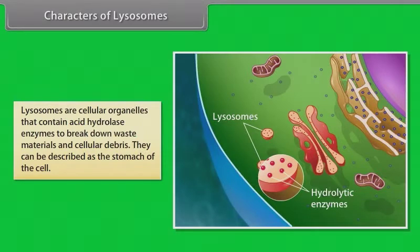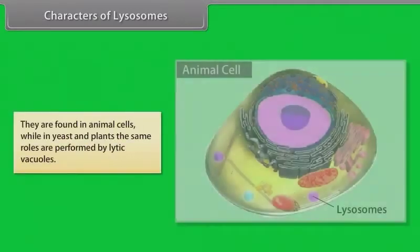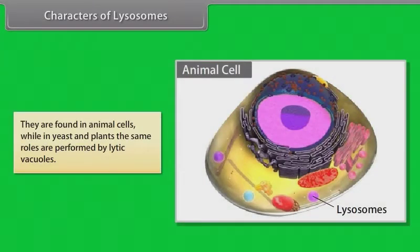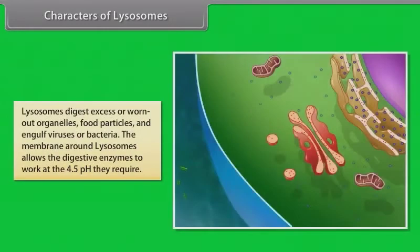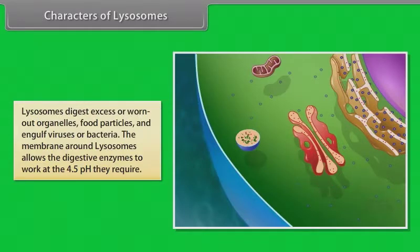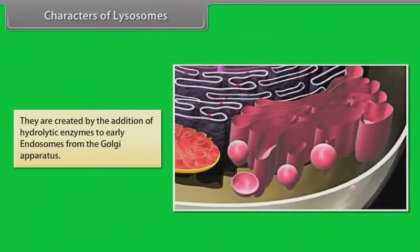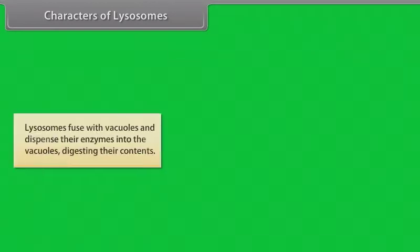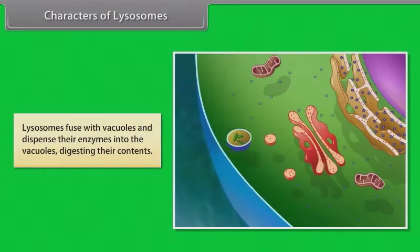Lysosomes can be described as the stomach of the cell. They are found in animal cells, while in yeast and plants the same roles are performed by lytic vacuoles. Lysosomes digest excess or worn-out organelles, food particles, and engulf viruses and bacteria. The membrane around lysosomes allows the digestive enzymes to work at the 4.5 pH they require. They are created by the addition of hydrolytic enzymes to early endosomes from the Golgi apparatus. Lysosomes fuse with vacuoles and dispense enzymes into the vacuoles, digesting their contents.